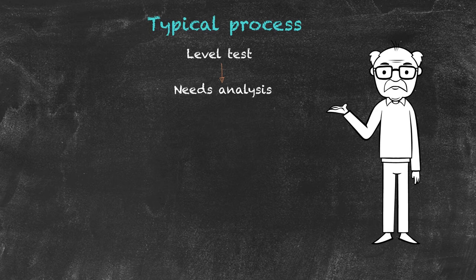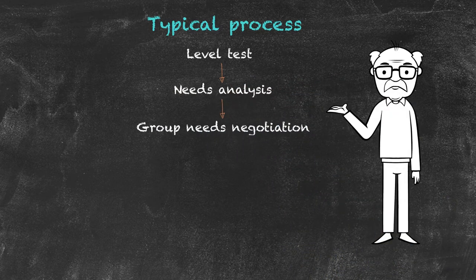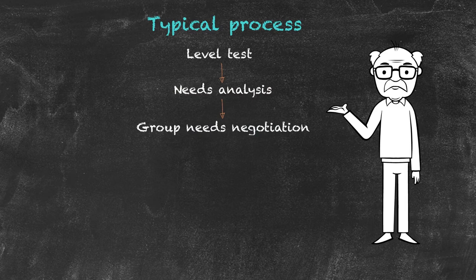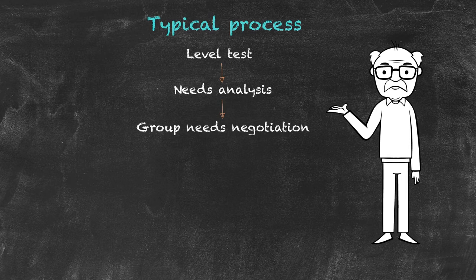It's very often next that you get your group together first of all and do a group needs negotiation. So you and your group discuss what it is that they need to get out of your course, what it is they're expecting your course to teach them and you can try to guide them along the lines of where your syllabus is actually going to take them.